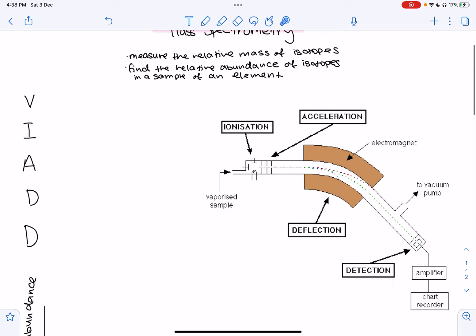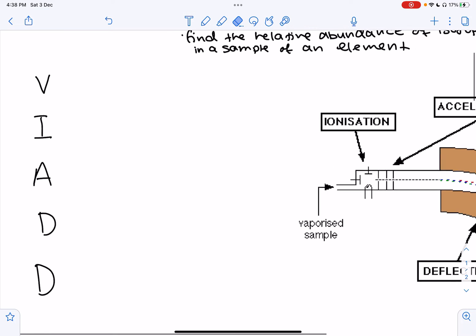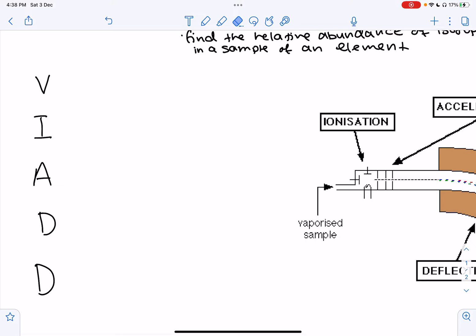There are five main steps to the mass spectrometry process, and it's very important that you know these five different steps.